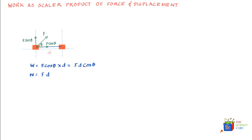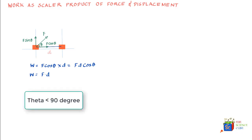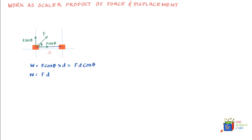As long as theta is less than 90 degrees, cos theta is positive, and therefore f d cos theta is positive. So the work done is positive if theta is less than 90 degrees. You can also see that as long as the force makes an angle less than 90 degrees with the horizontal, its horizontal component is actually helping the mass move in the direction of displacement.